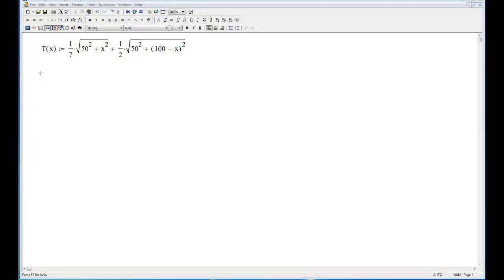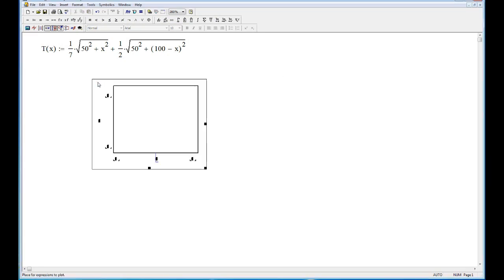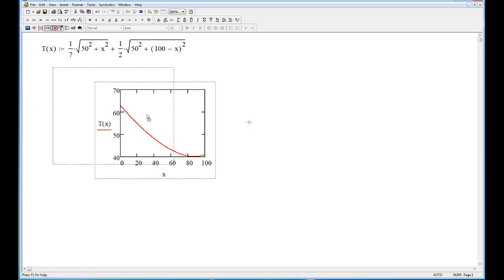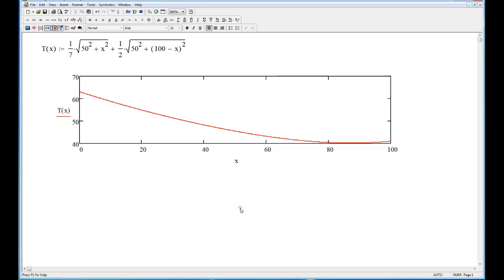Here we are back in MathCAD. And I've typed in the objective function for the lifeguard problem. And let's just make sure we've got it right here. I think it's right, but it's always good to draw a picture if you can. Double check and make sure that you've got everything correct before you move on. Never miss a chance to check your answer, gang. And that sure looks right. Looks like the minimum is about 87.2.